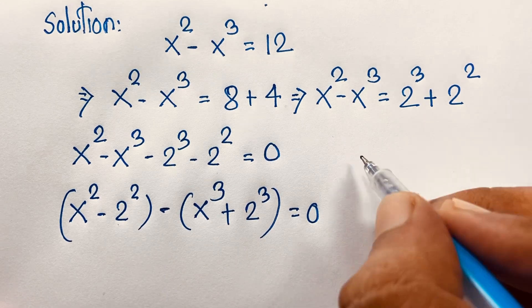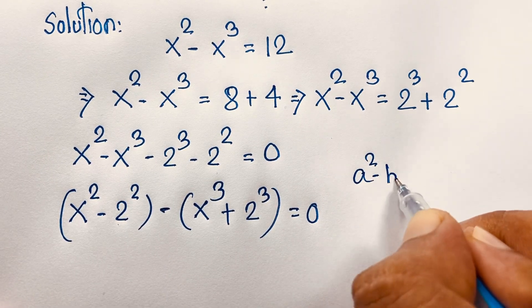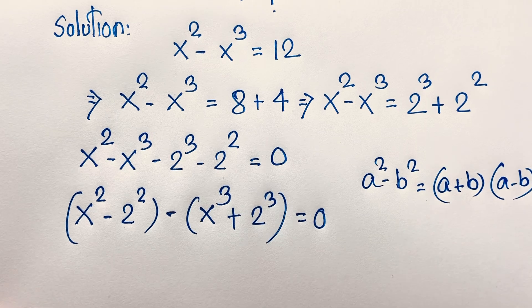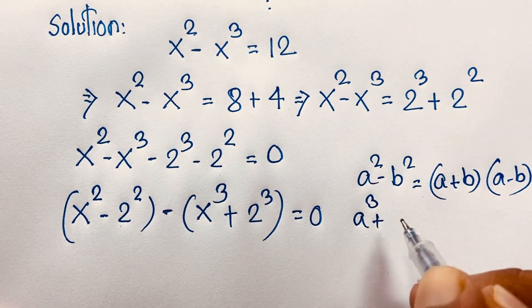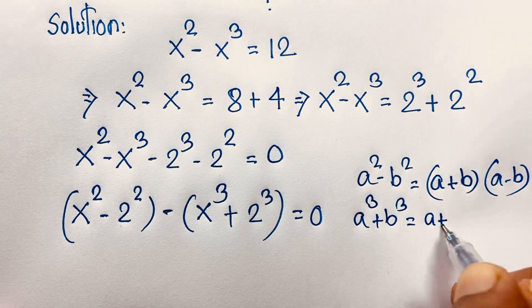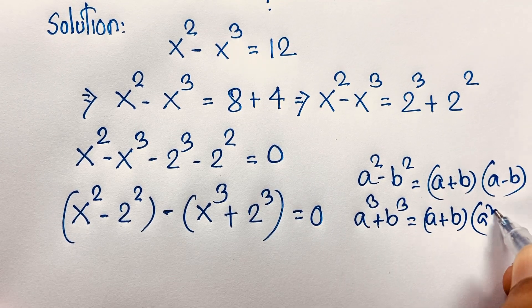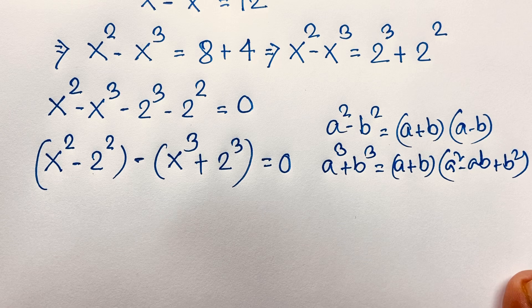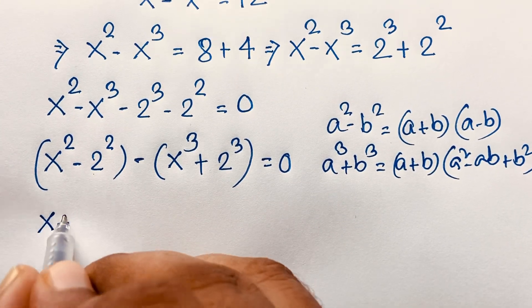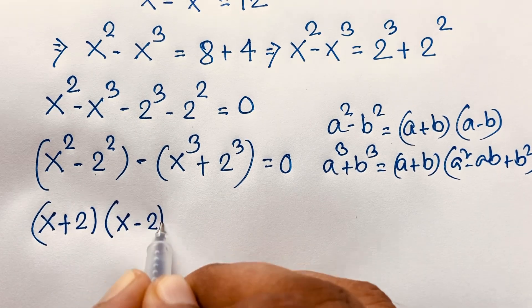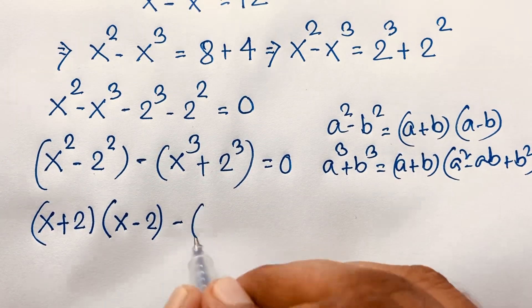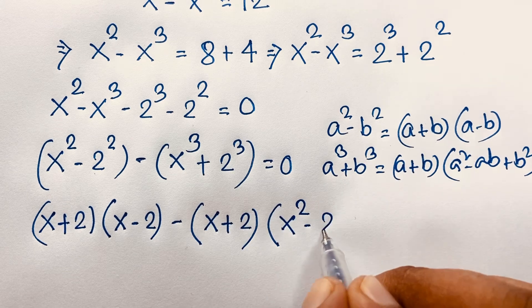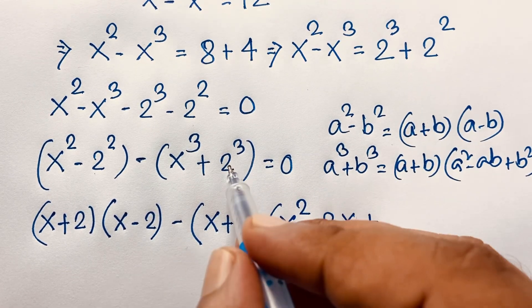Now I apply two formulas: a squared minus b squared, and a cubed plus b cubed. The formula a squared minus b squared equals a plus b times a minus b. And a cubed plus b cubed equals a plus b times a squared minus ab plus b squared. Applying both formulas here, this expression becomes x plus 2 times x minus 2, then x plus 2 times x squared minus 2x plus 4.